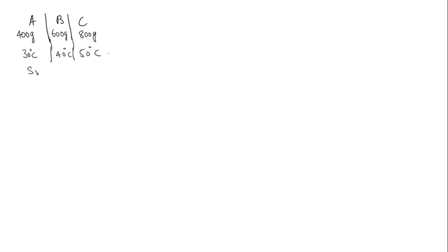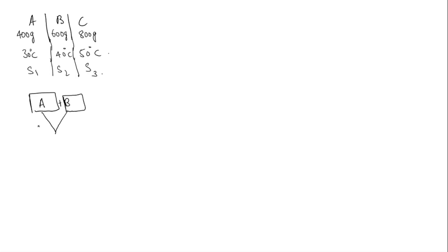Specific heat of A is S1, B is S2 and C is S3. We need to find the ratio of S1, S2 and S3. It is given that when A and B are mixed, the resultant temperature is 36 degrees Celsius, and when B and C are mixed, the resultant temperature is 44 degrees Celsius.